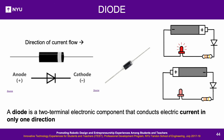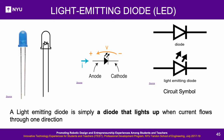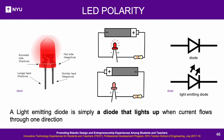A diode is used in applications where current should only flow in one direction — it acts as a complete conductor in its forward direction and a complete insulator in its reverse direction. All diodes have a gray band on one end indicating the forward direction. A light-emitting diode (LED) is a special type of diode that emits light when conducting current in its forward direction. An LED has two leads: the longer lead is positive and the shorter is negative. The polarity is also indicated by a flat end on the base. If connected the wrong way, there will be no current flow, but it won't damage the LED.